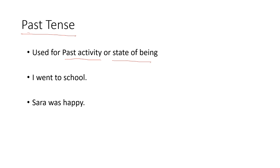For example, I went to school. When did I go to school? I went to school before now, in the past. And this is a past activity — it is an action I did in the past. I went for shopping. I jumped into the lake. It's all what I did before now.